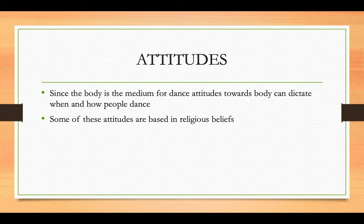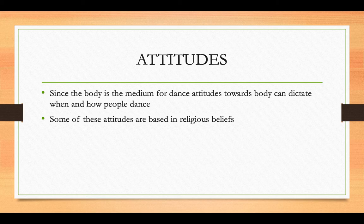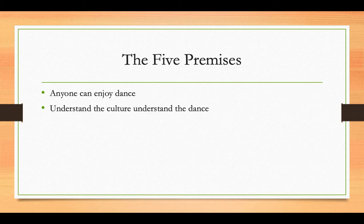You had a reading already that began this discussion. This is a reminder that the body is a medium for dance. And because it is the medium for dance, when you're looking at dance forms and the communities where these dance forms are coming from, they will be influenced by the attitude of the people that are doing the dance. If a community or culture believes that a certain body part is special, their dance forms might highlight that body part. If, on the other hand, they feel that a body part is unacceptable or inappropriate, they might not accentuate that body part as much. Some of these attitudes are based on religious beliefs. So in your reading — the five premises — we learn that anyone can enjoy dance, but there is a deeper understanding when you understand the culture that the dance comes from.